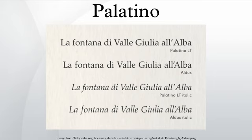Palatino Nova is a redesigned version of Palatino, by Hermann Zapf and Akira Kobayashi. The Palatino Nova typeface family includes Roman and italics in the light, text, medium, and bold weights, a titling face formerly called Michelangelo titling, and a large and small capital face called Palatino Nova Imperial, formerly called Sistina.